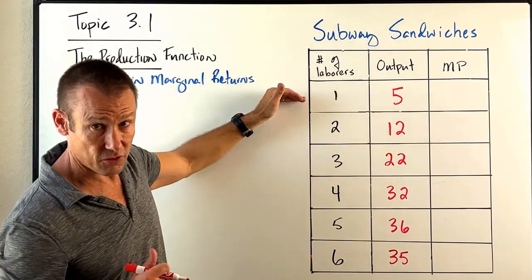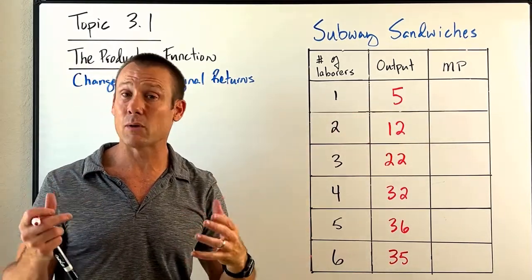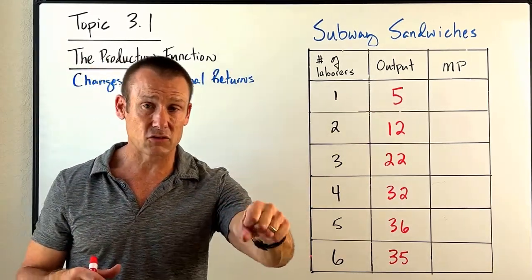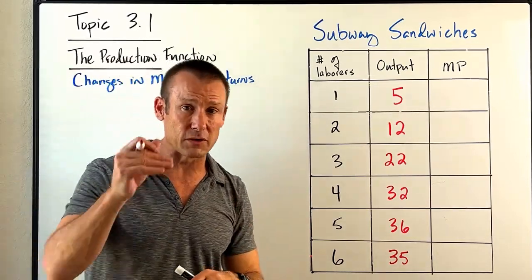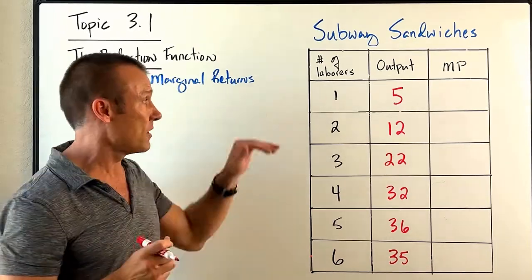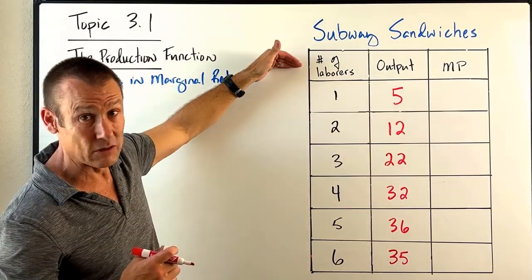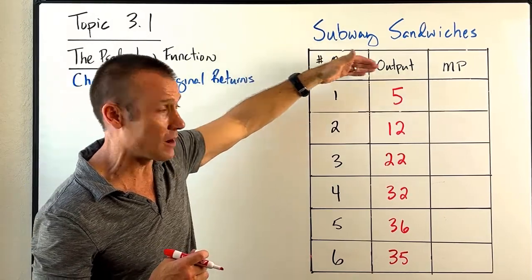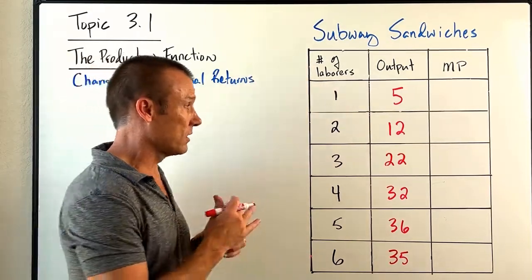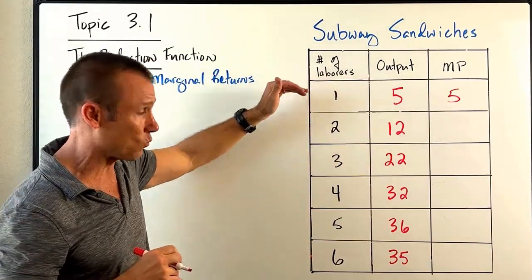Our first worker, when we only have one person working there, can only make five sandwiches per hour. They're doing the meat side, the veggie side, checking people out at the cash register, answering the phone, and running to the back when something runs out — no specialization at all. Since with zero laborers output would have been zero, our marginal product for the first worker is five — same as the total product.